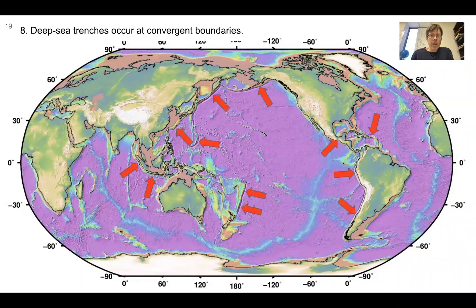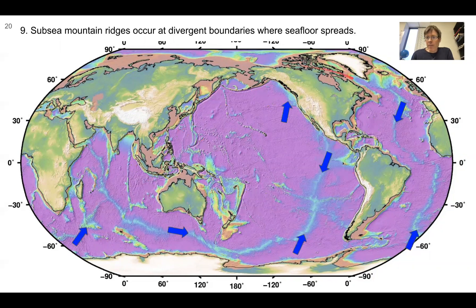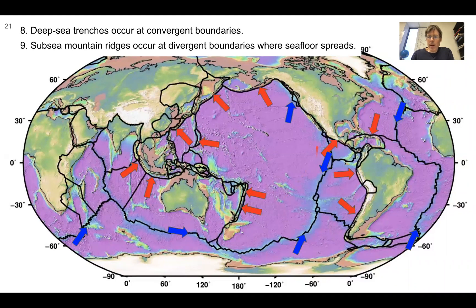Here's our global map of bathymetry and topography. From mapping the seafloor, we observed that deep sea trenches occur at convergent boundaries — where plates are converging, you have deep sea trenches. Along the Aleutian-Alaska margin, all these arrows point to some of the deepest parts of the ocean floor, where convergent boundaries occur. We also have a pattern of subsea mountain ridges in the bathymetry that occur at divergent boundaries where seafloor spreads — buoyant, hotter material leads to ridges higher than the surrounding seafloor. Putting these together with plate boundaries, the mid-ocean ridges are aligned with spreading boundaries, and trenches are aligned with subduction zones.